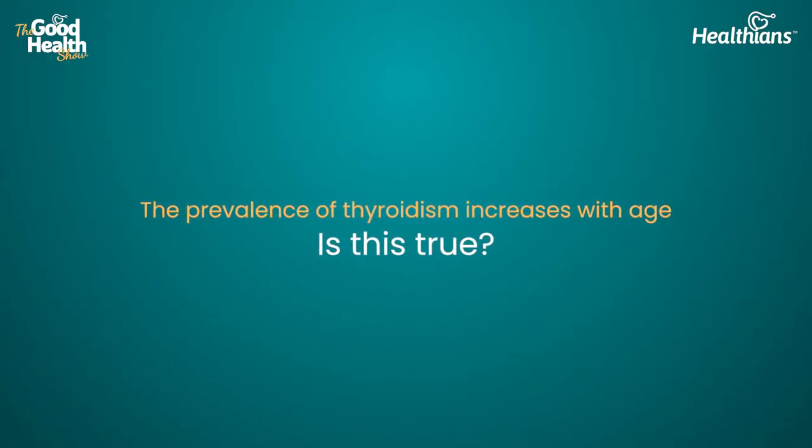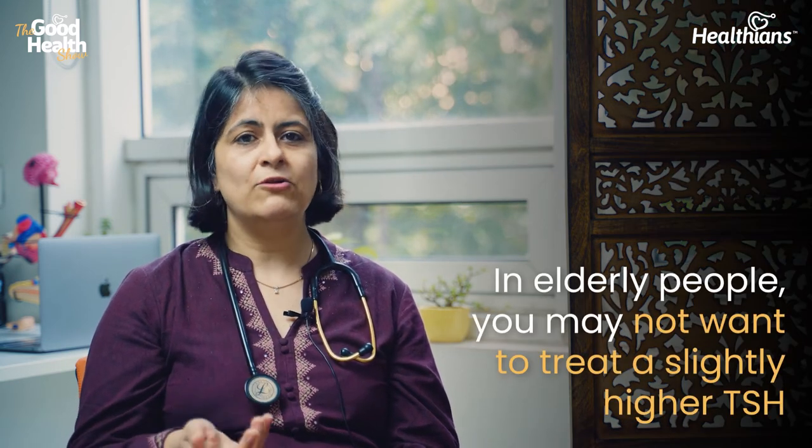The prevalence of thyroid disorders increases with age — is this true? Yes. Two things are happening: first, the normal TSH value itself increases with age; second, any autoimmune disease, including hypothyroidism, tends to increase with age. The prevalence of antibodies and autoimmune diseases rises with increasing age. However, in an elderly person, you may not want to treat a slightly high TSH, because that may be a normal pattern given that normal TSH values also increase with age.